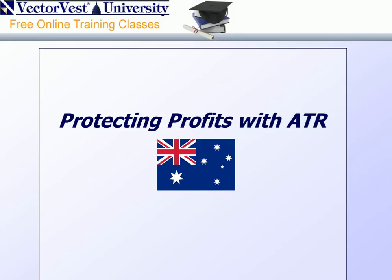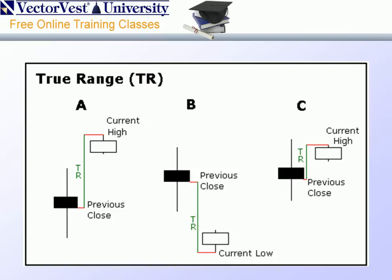If we're going to look at the Average True Range, we need to start off with the True Range. Here we have a couple of scenarios of price action. In example A, we see that the current high minus the previous close gives us the true range of this second bar, because we're going to include this gapping action in the price movement. Conversely, a downward price action will take the current low minus the previous close, which again allows us to include the gapping action.